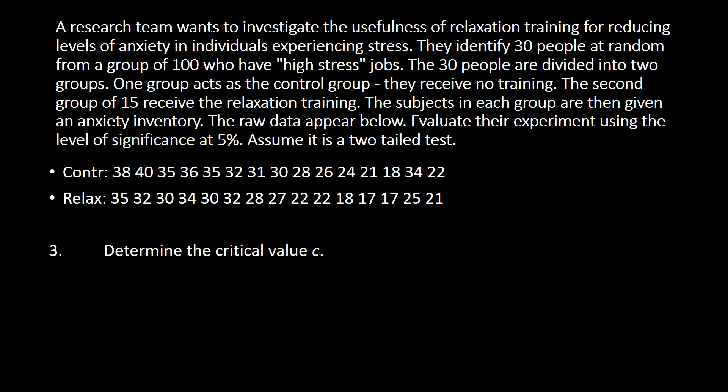Step number three is determining the critical value. First, we identify the type of tail test. Since we are checking whether there is a significant difference or not, we have a two-tailed test. We also note that the level of significance according to the problem is five percent, so we have alpha = 0.05.